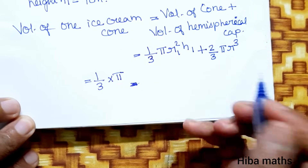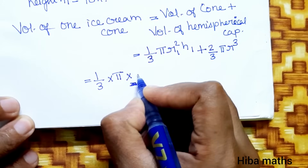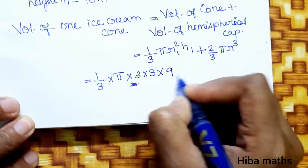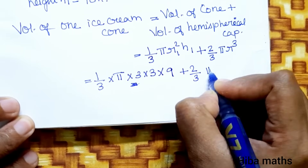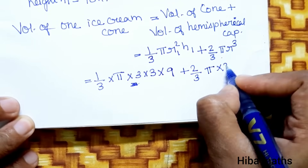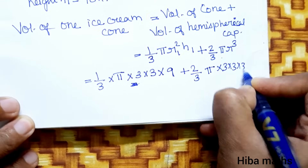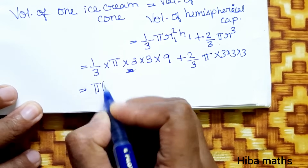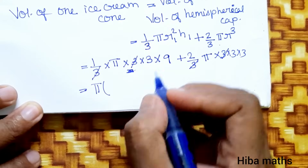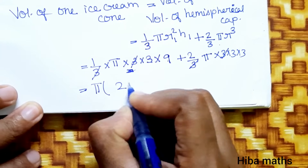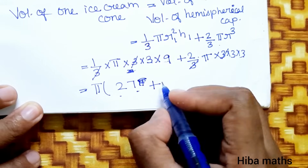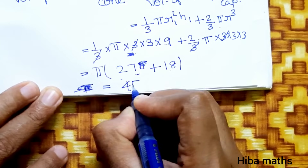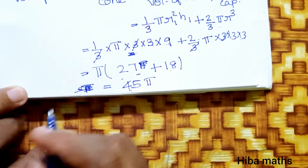Substituting: (1/3) × π × r1² where r1 = 3, so 3² = 3 × 3, × height 9, plus (2/3)π × r2³ where r2 = 3, so 3³ = 3 × 3 × 3. Simplifying with π common: 3 cancels, giving 9 × 3 = 27 plus 3 × 3 = 9, and 9 × 2 = 18, giving 45π.